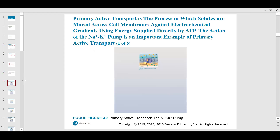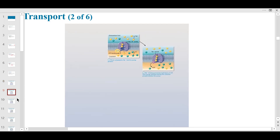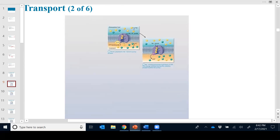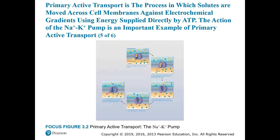Primary active transport uses ATP directly hydrolyzed to move things against the gradient — like the sodium-potassium pump. Sodium is more prevalent on the outside, so moving sodium out takes energy. Potassium is more abundant inside the cell, so it takes energy to move potassium into the cell. That's primary active transport based on direct hydrolysis of ATP. The sodium-potassium pump is an antiporter and a pump.